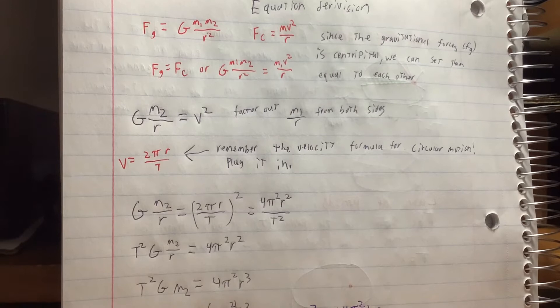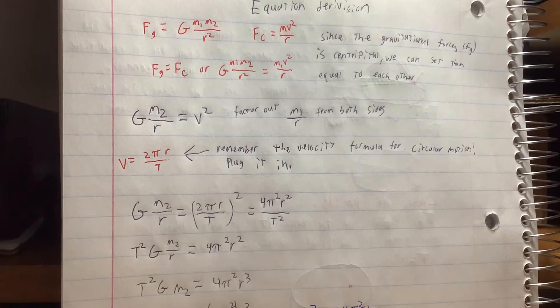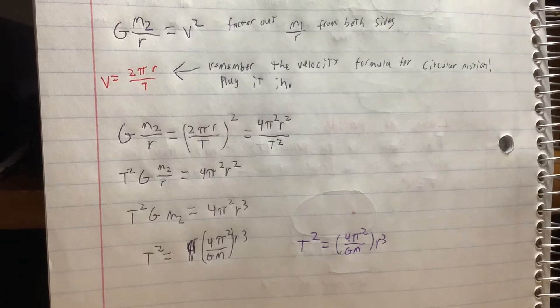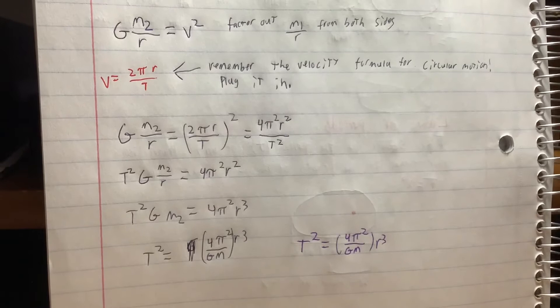4 pi squared over g m times r cubed. That is our period squared and that would be our semi-major axis cubed. That is it for the third law and deriving its equation.